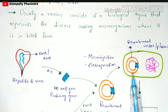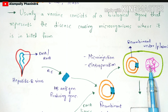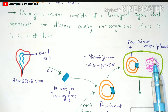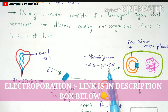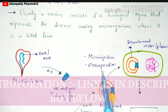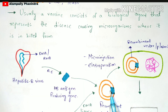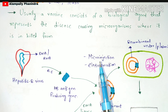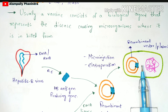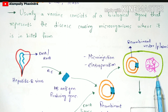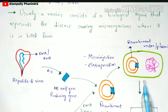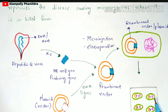Since no plasmid is present in the yeast cell, inject the recombinant vector plasmid into the yeast cell. This can be done using two methods: micro injection or electroporation. Electroporation has already been explained in a previous video. After inserting the recombinant vector into the yeast cell, this yeast cell is now called a recombinant yeast cell, because it contains the recombinant vector or recombinant plasmid.